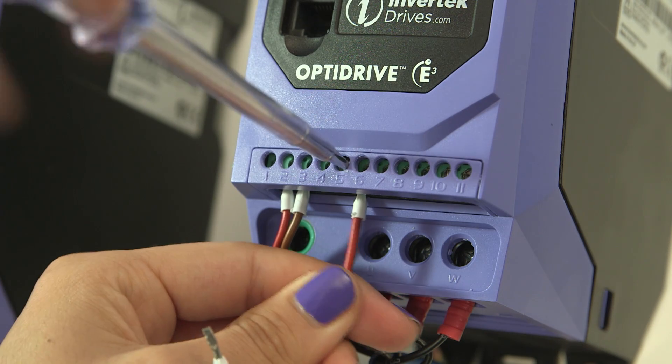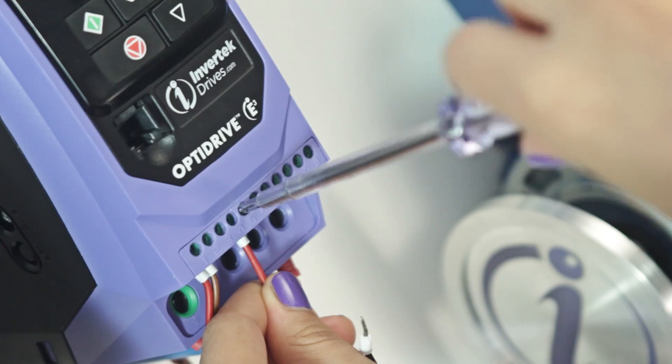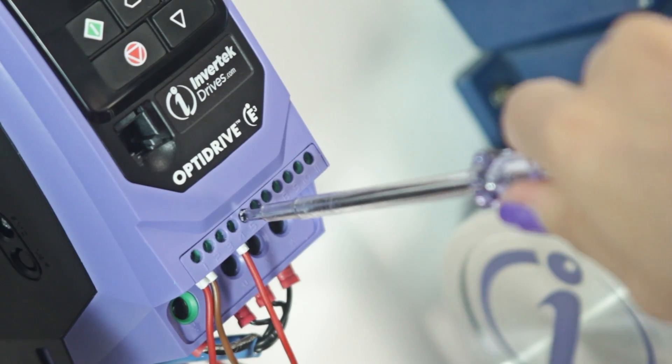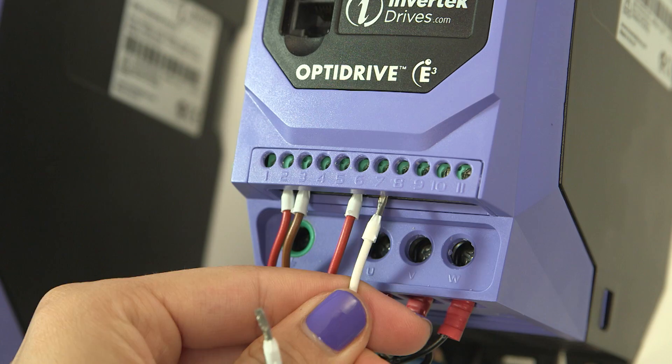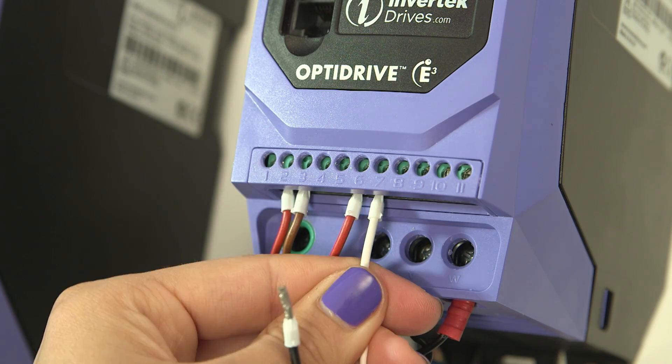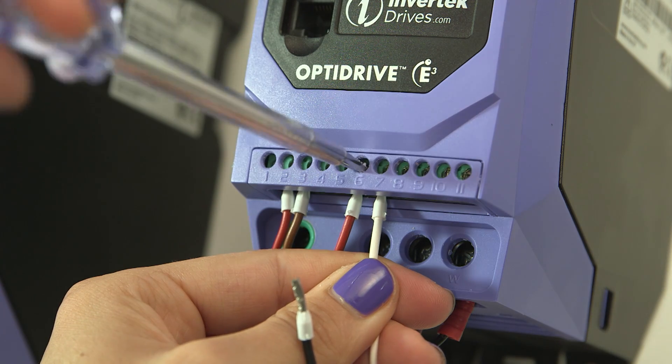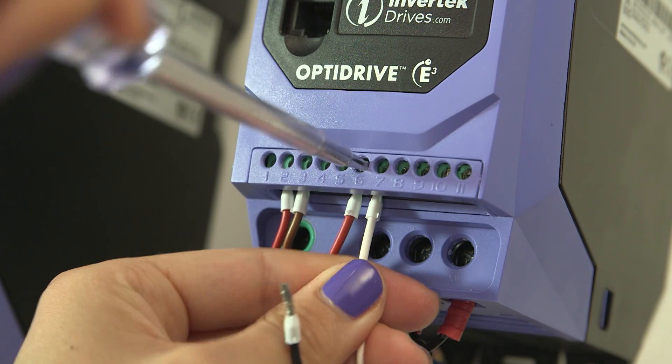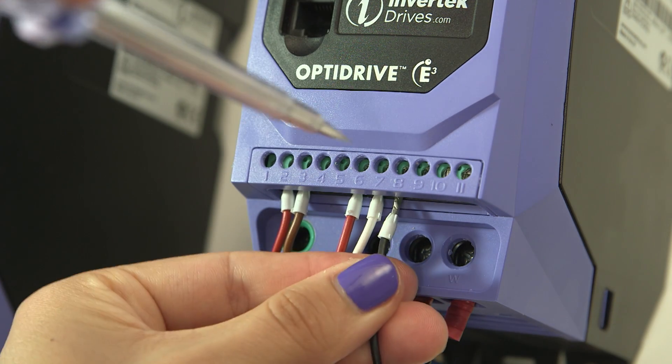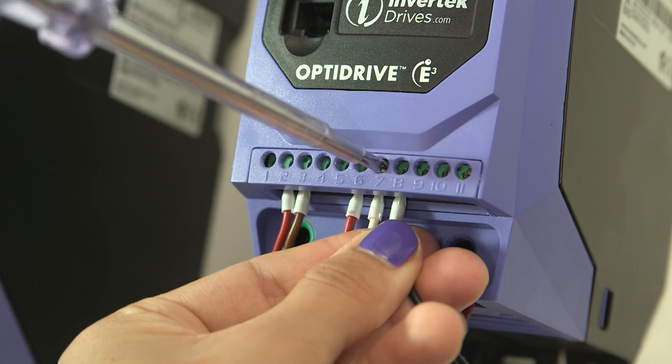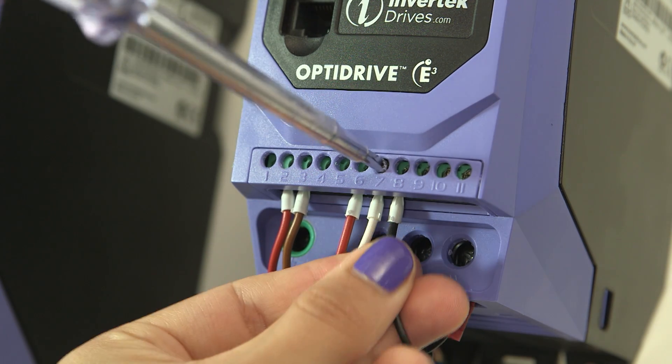Now connect a pot to 5 which is 10V, 6 analog input, and 7 zero volts. The default setting on the analog input is 0-10V, but you can choose many other settings such as 0-20mA or 4-20mA.